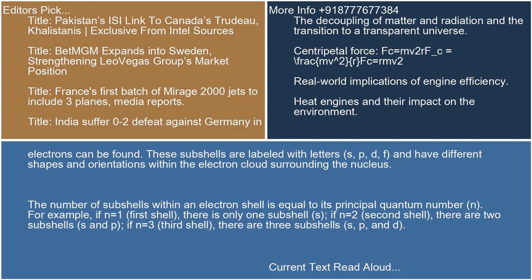If N equals 2 (second shell), there are two subshells: S and P. If N equals 3 (third shell), there are three subshells: S, P, and D.